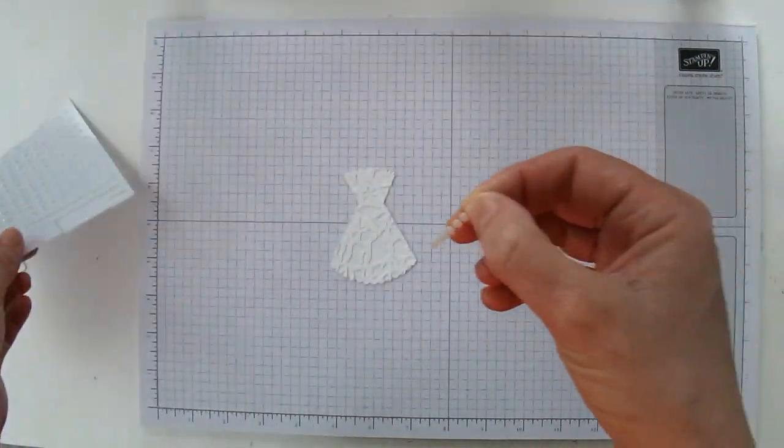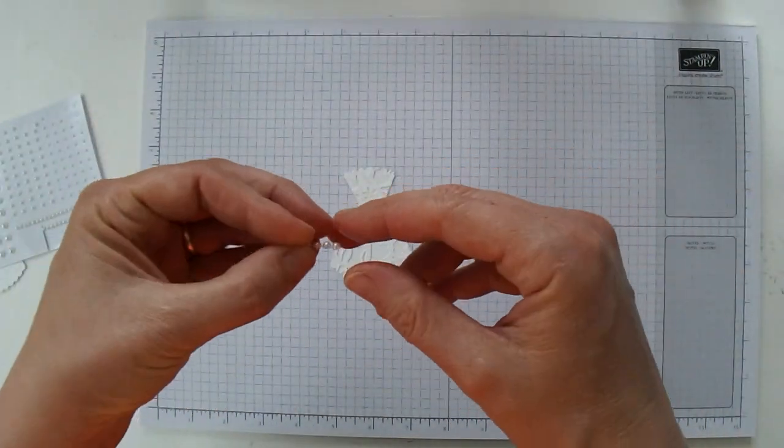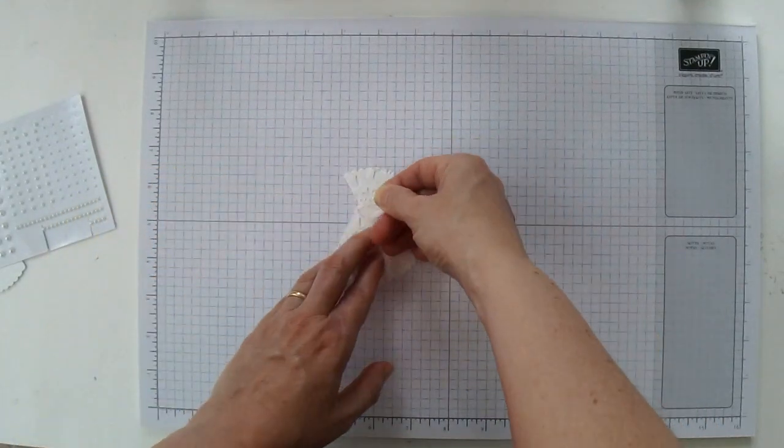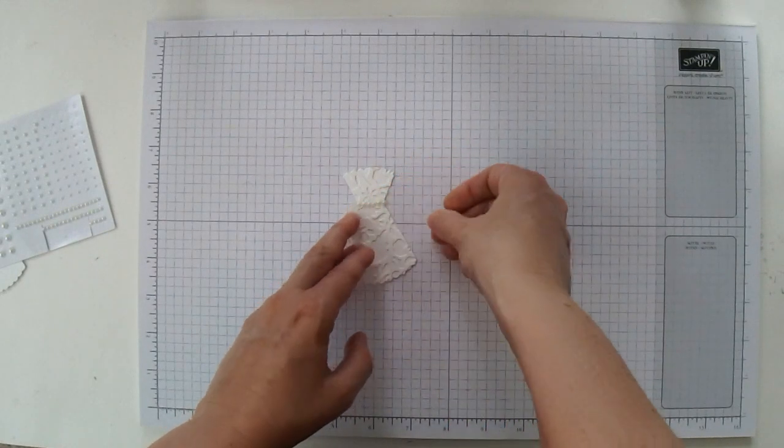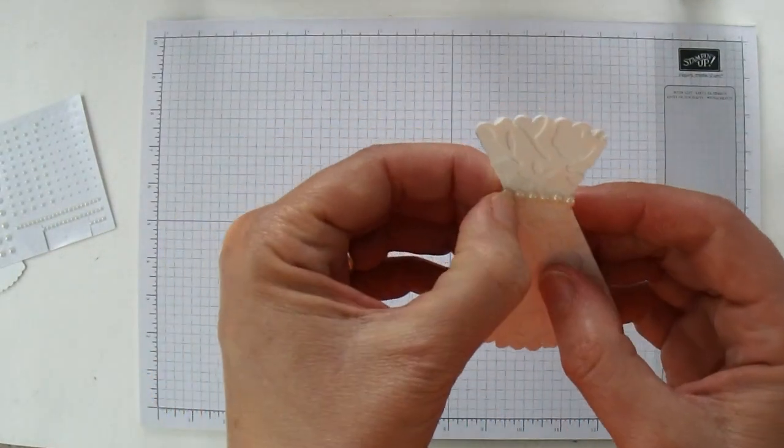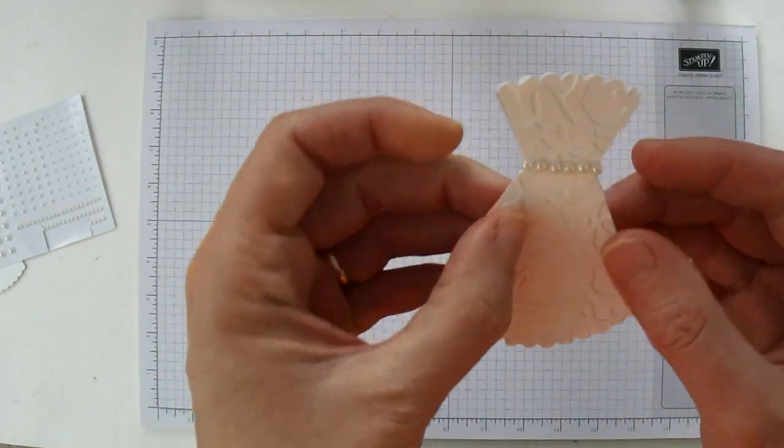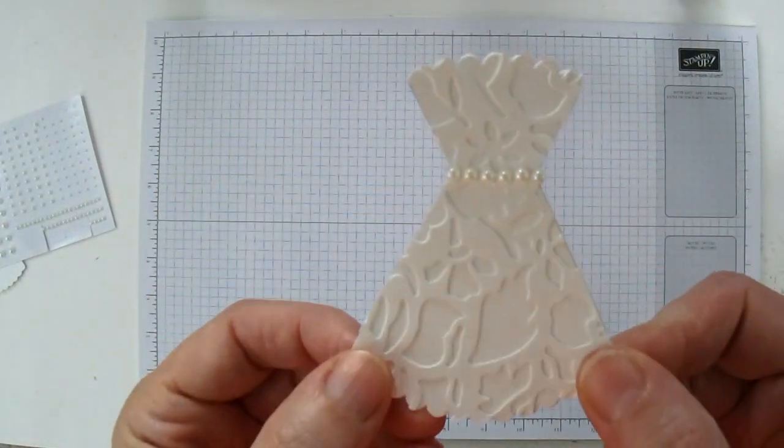And then I'm just going to peel off these little six like that, and then I'm just going to adhere them along the waist like that. And I think that makes a really cute looking wedding dress.